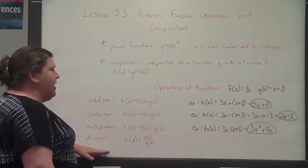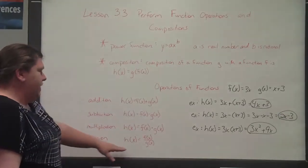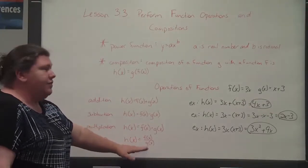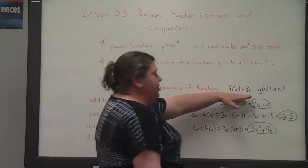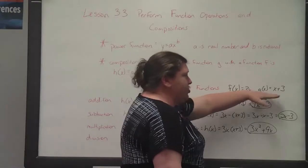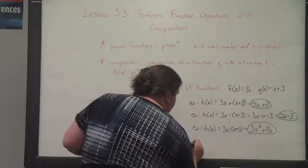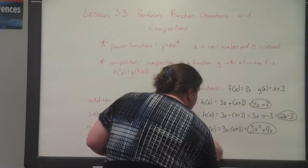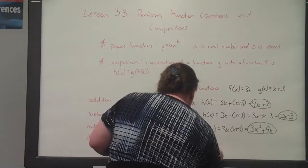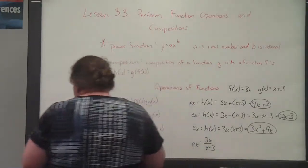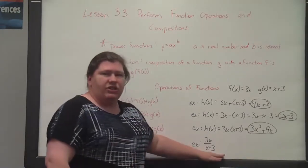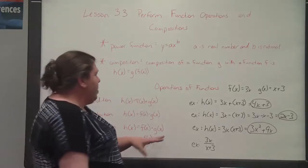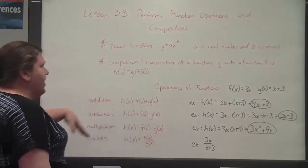The last operation of functions is division: h of x equals f of x divided by g of x. Using the same functions, we get 3x divided by x plus 3. That expression will not reduce any further when simplifying, and that covers all the examples of the operations of functions.